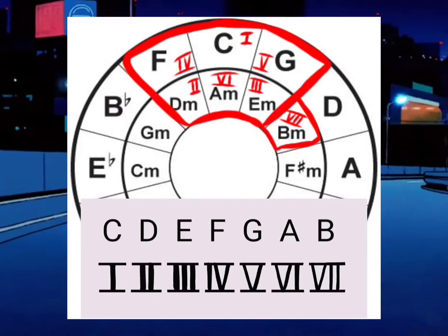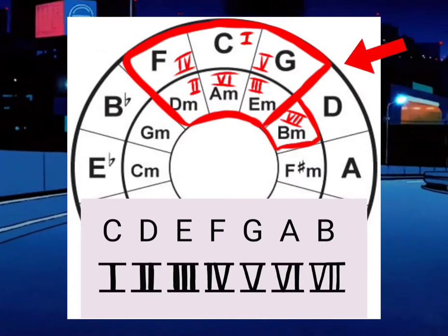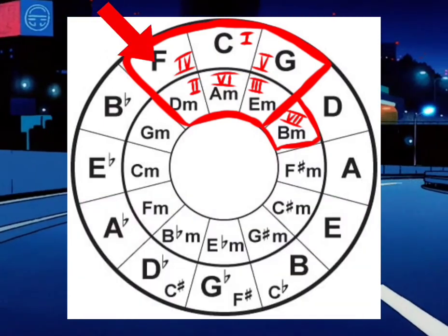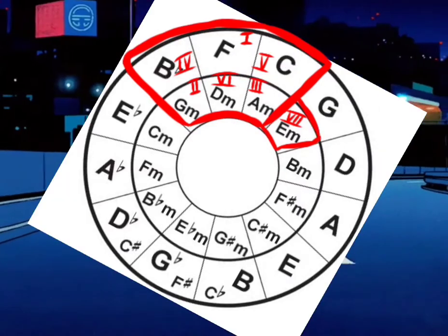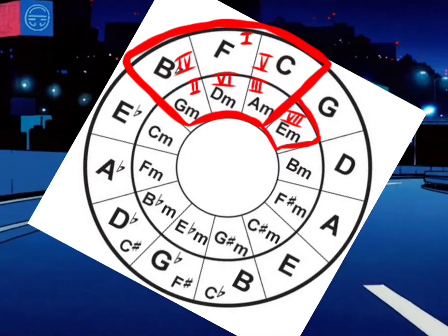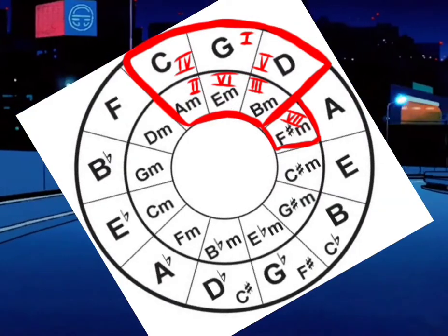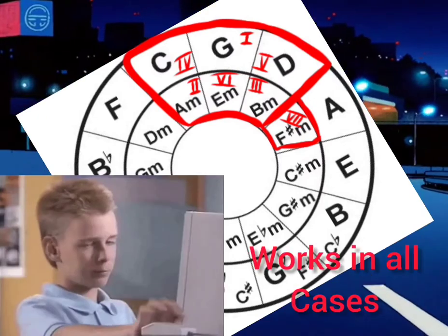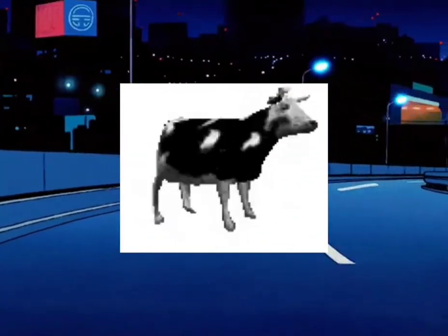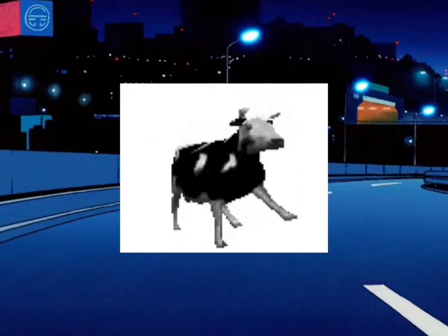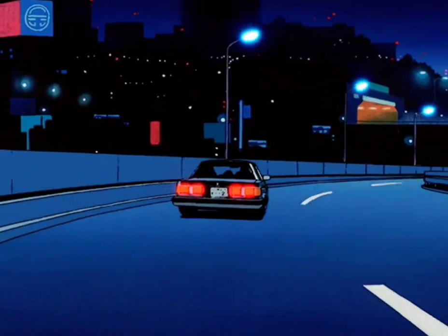For example, if we want to find the notes of the F major scale, we only move this circle like this. And if we wanted to know the G major scale, we only need to move like this. That's how we find all the notes. This is very important — we are going to use it to find the chords of the C major scale.